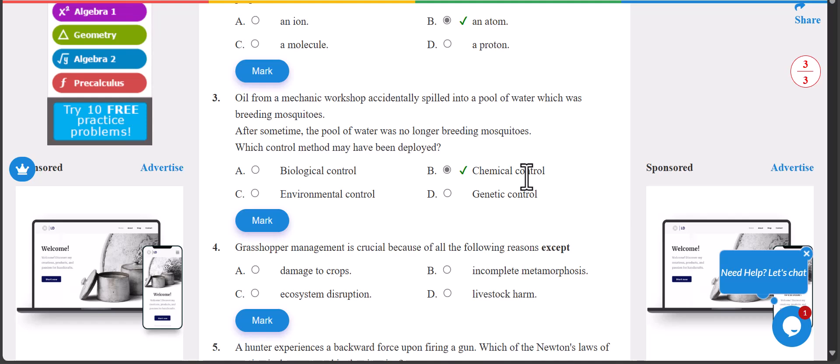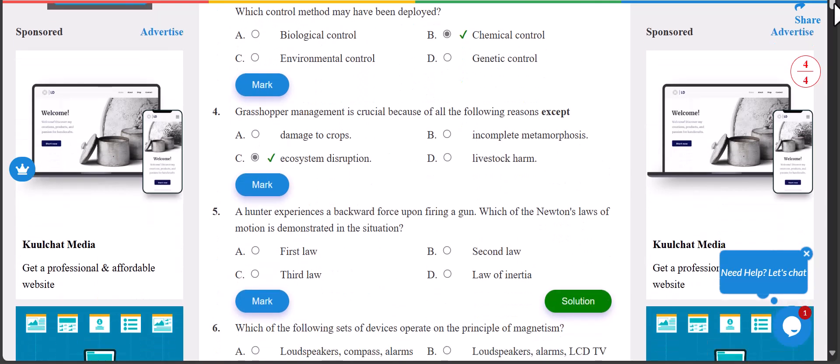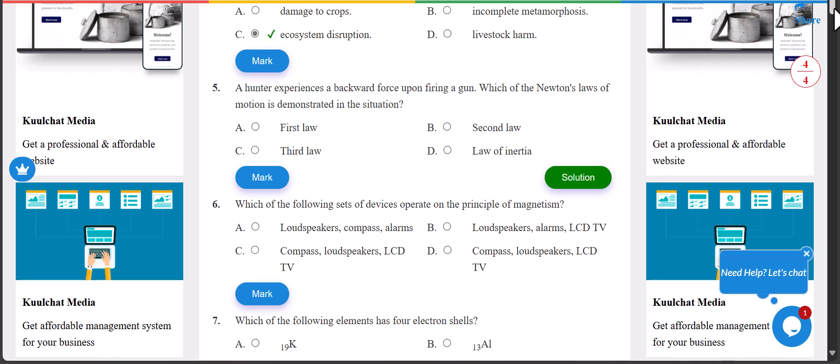Number four: grasshopper management is crucial because of all the following reasons except what? The answer is C - ecosystems. Number four, you have to check it out.